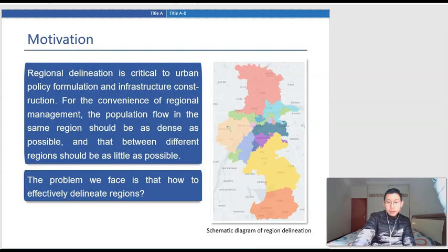Regional delineation is the task to divide the urban area into several geographical regions according to principles of urban planning, which is critical to urban policy formulation and infrastructure construction. For the convenience of urban planning, the population flow in the same region should be as dense as possible. However, the traditional method of urban planning used to rely on a lot of power and material resources.